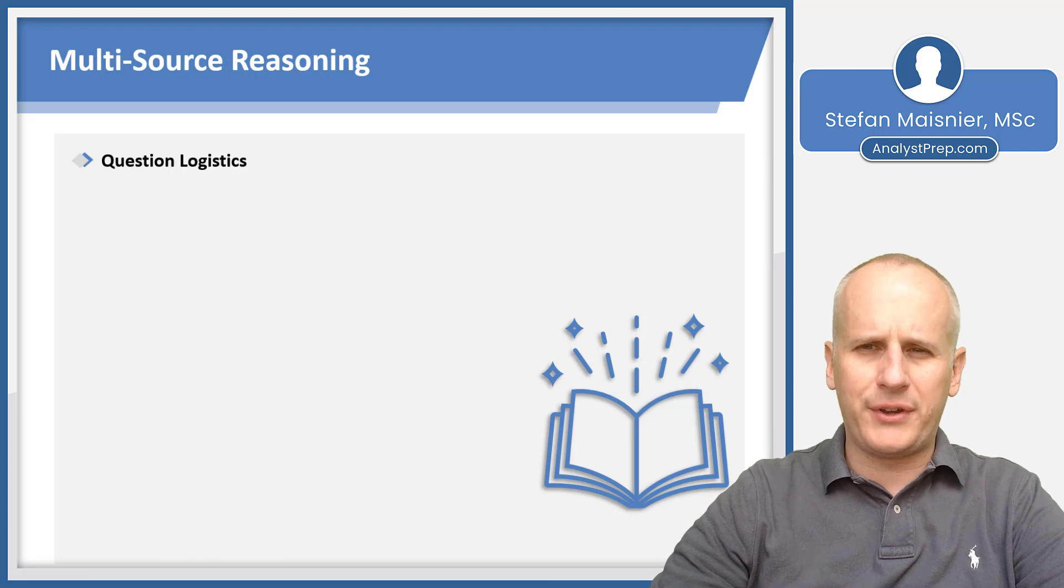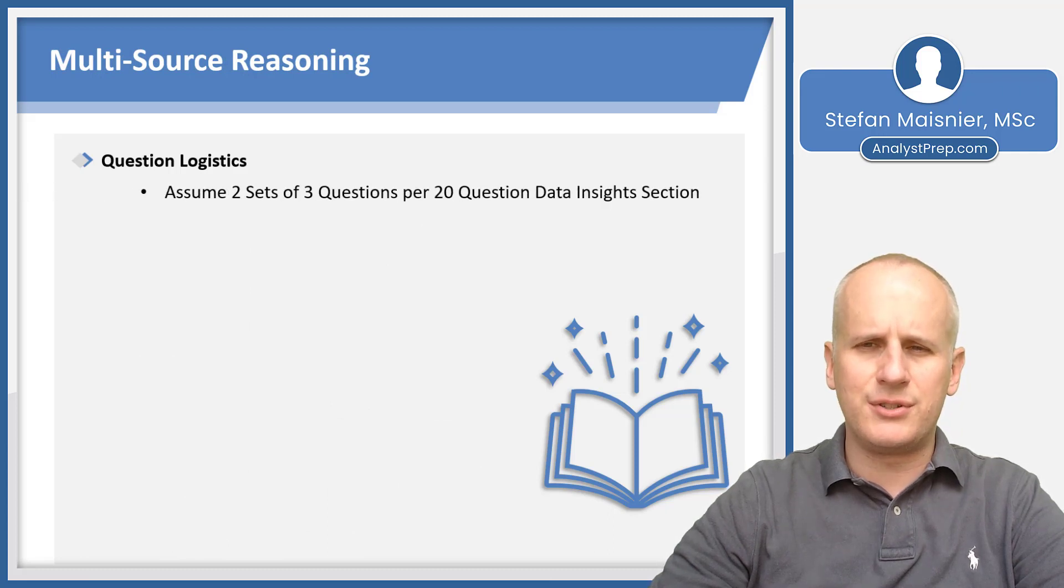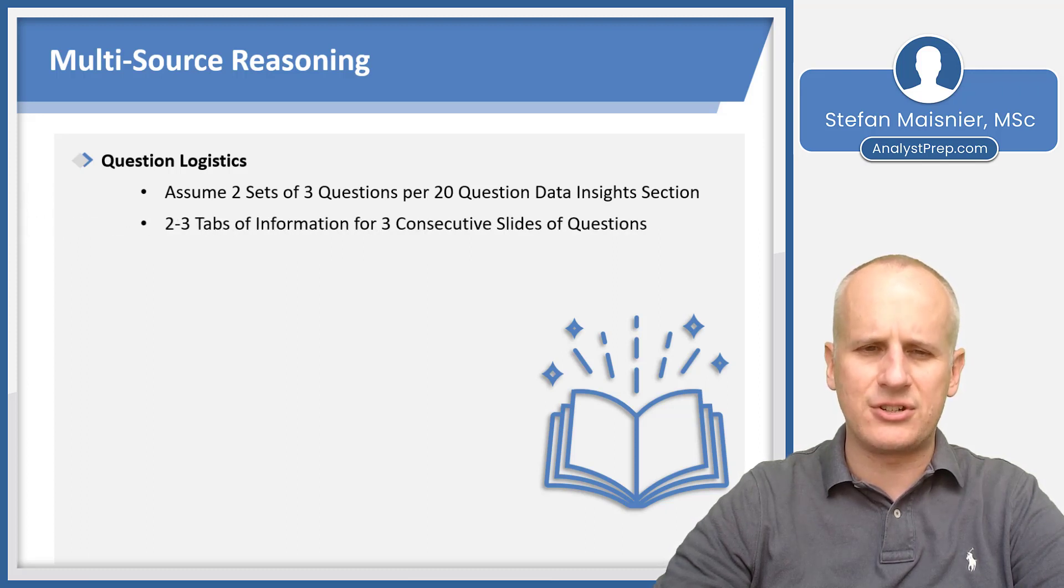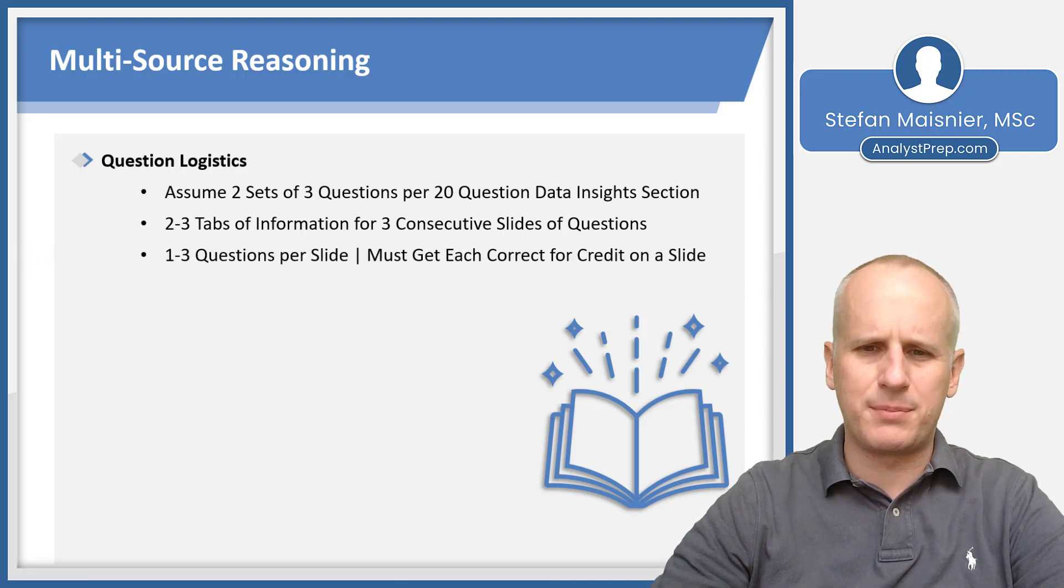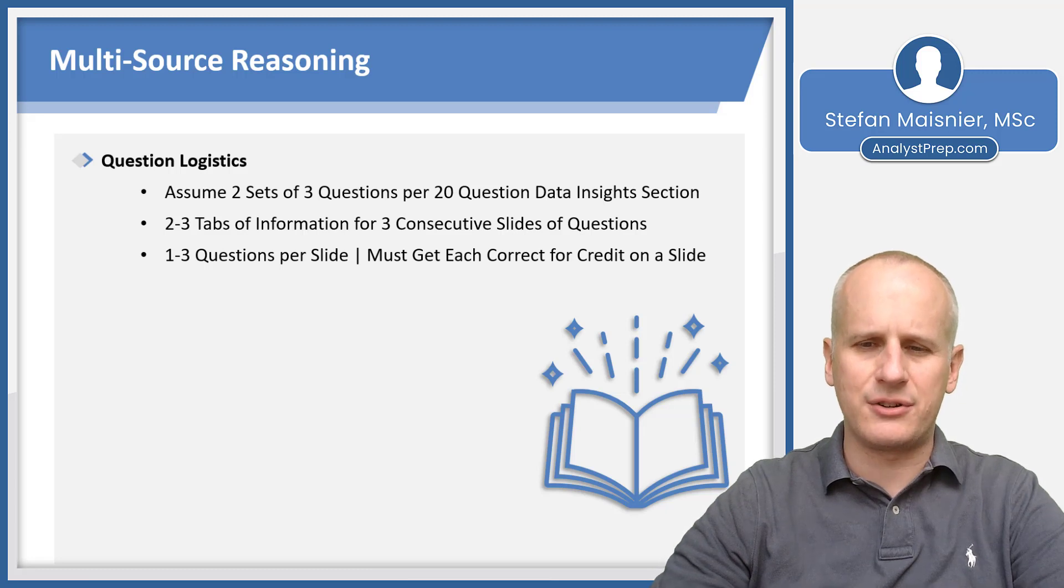Then we get to our multi-source reasoning, and you're going to assume two sets of three questions each for multi-source reasoning in the 20-question data insights section. You'll have two to three tabs of information, and these tabs will be static for three consecutive slides of questions. You'll have one to three questions per slide, and once again, you must get each answer correct for credit on that slide.